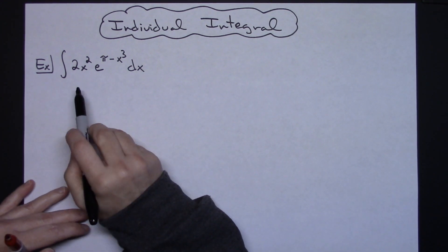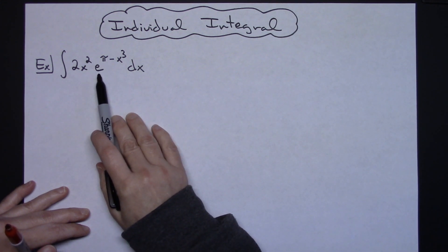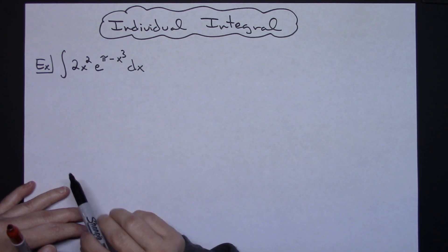In this video I'm going to work out an indefinite integral. We're going to have the integral of 2x squared e raised to the pi minus x to the third dx.